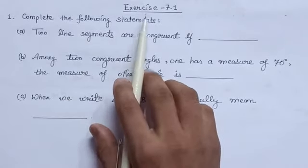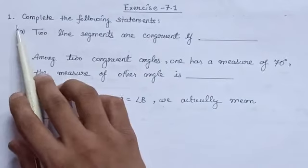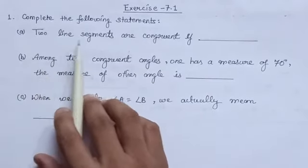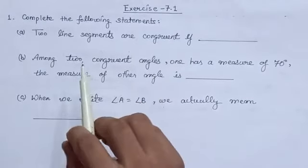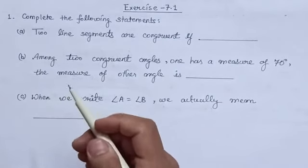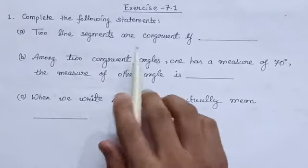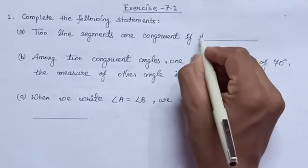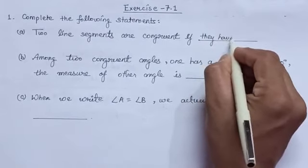Now let us move to exercise 7.1. The first question is: complete the following statements. First, two line segments are congruent if — the condition for congruency of two line segments is that they must have the same length. Hence, we can say two line segments are congruent if they have the same length.